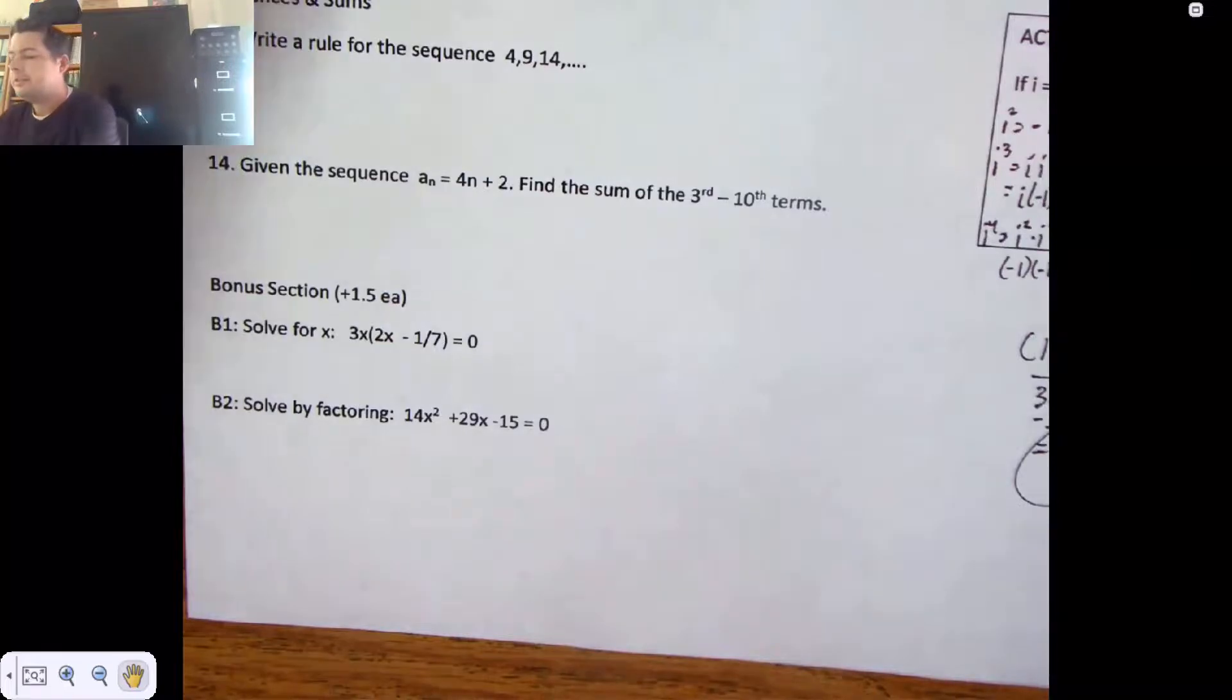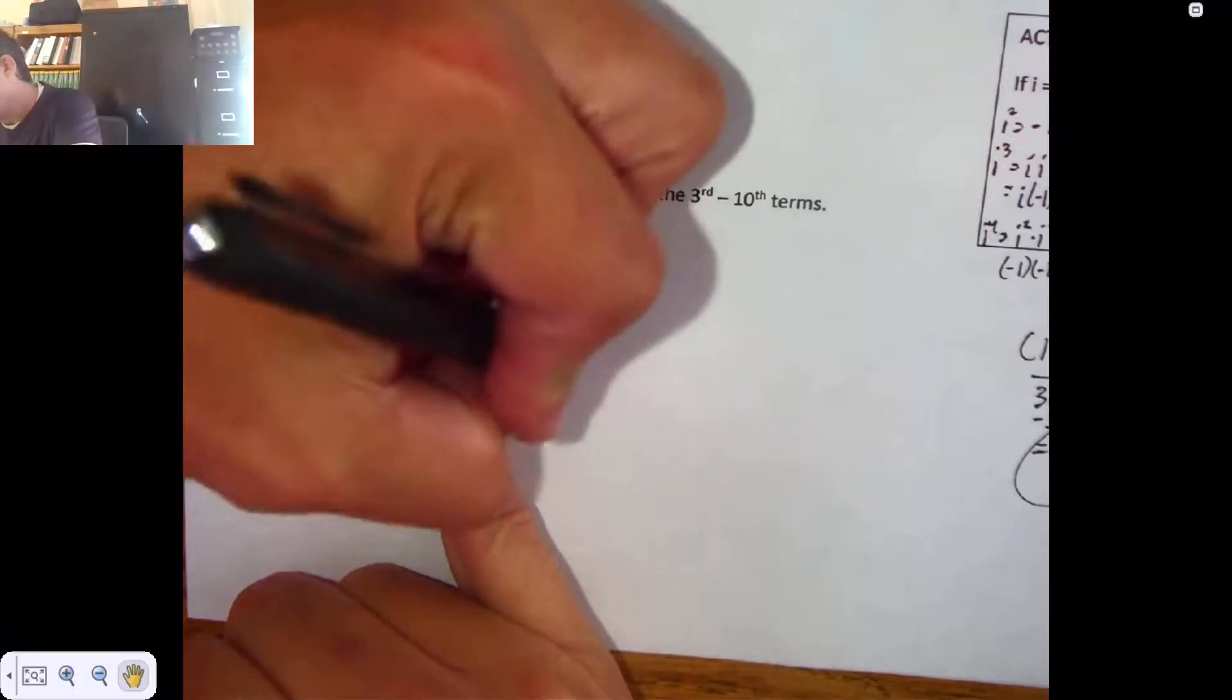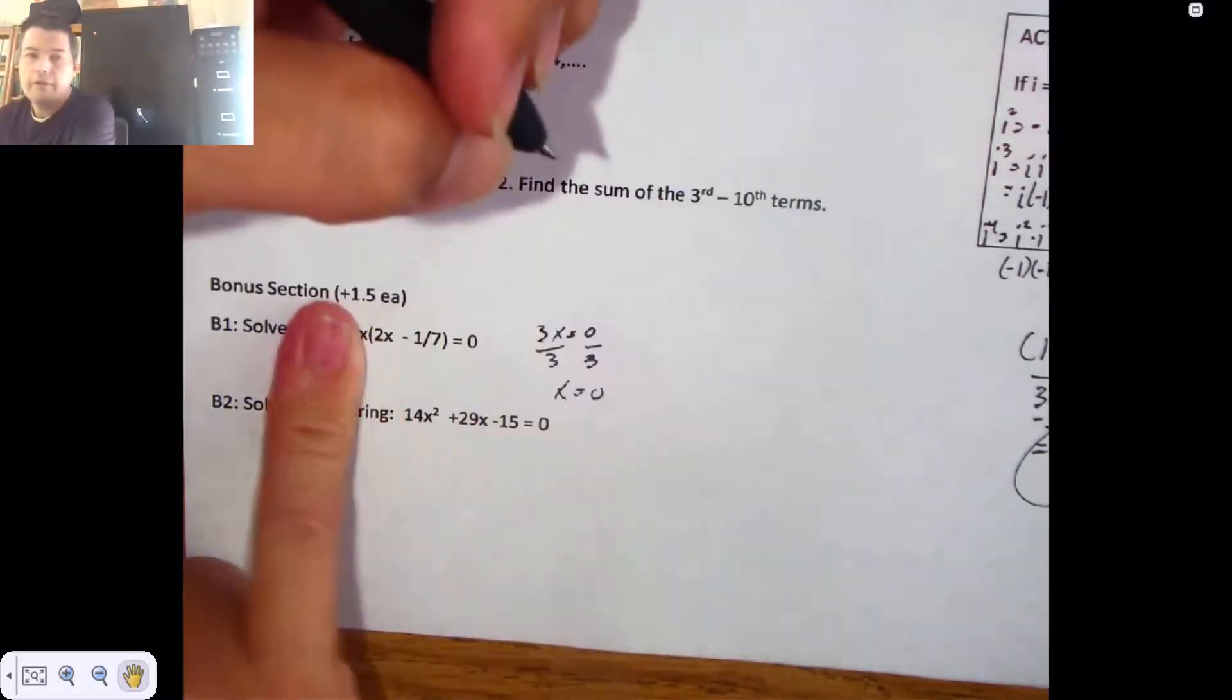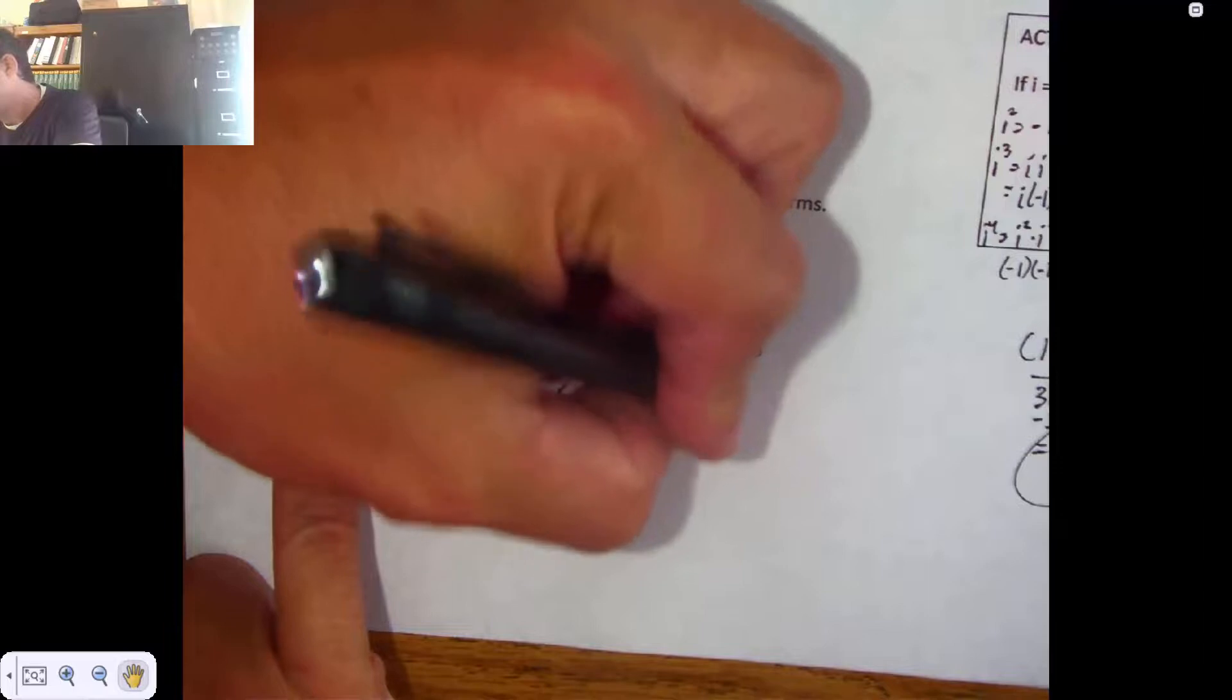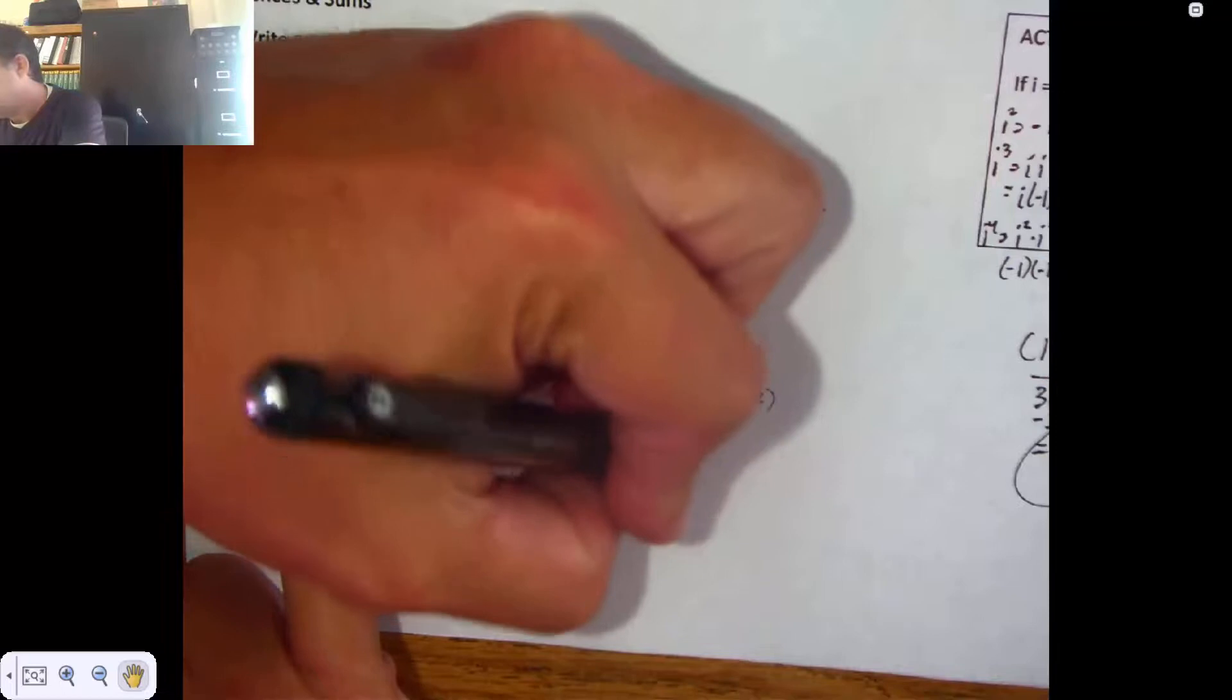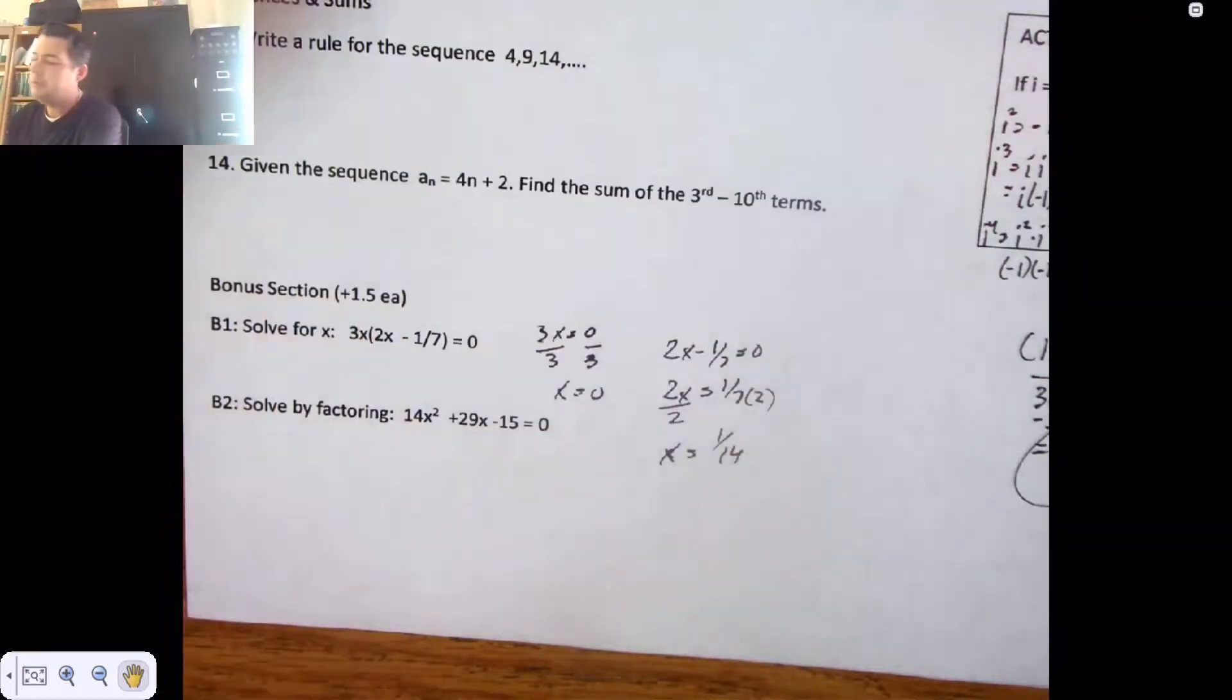Solve for X. Cover up technique. Three X is zero. Divide by three. X is zero. Cover up. Two X minus a seventh is zero. Add a seventh. Divide by two. And division happens in the denominator. And seven times two is 14. So one fourteenth. There's my two answers.